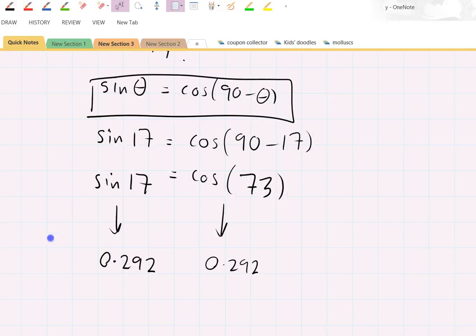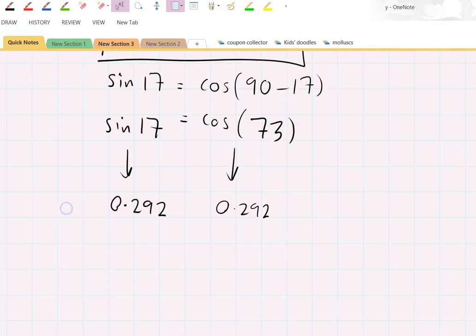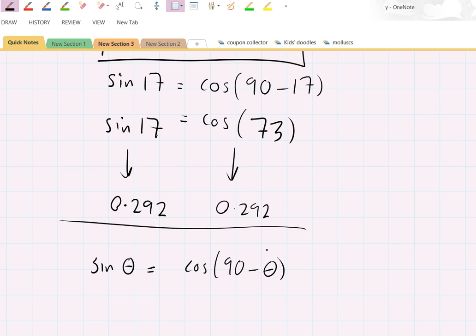Okay, so we looked at sine and cosine of angles. Sine theta equals cosine of 90 minus theta for any angle theta.